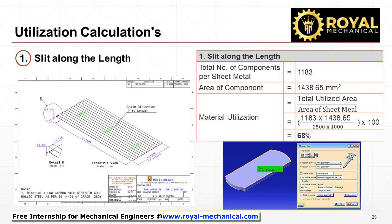Divide the total utilized area by the area of the sheet metal to calculate the material utilization. The total utilized area is the product of the total number of components per sheet metal and the area of the component. The area of sheet metal is the product of the length and width of sheet metal. By substituting the values, material utilization is 68%. The remaining 32% is scrap.